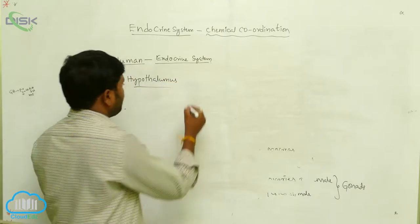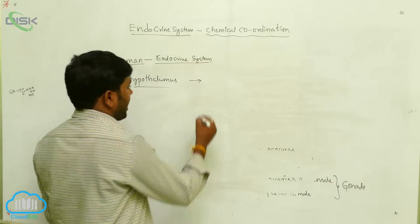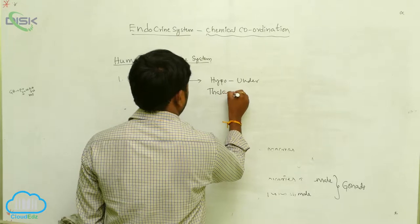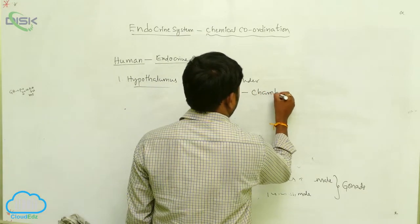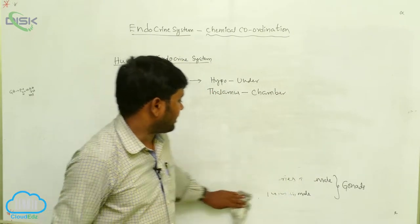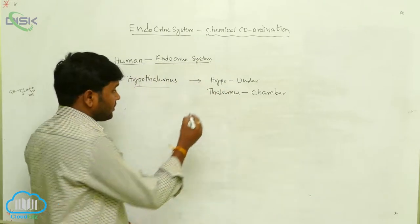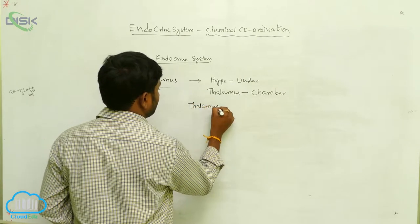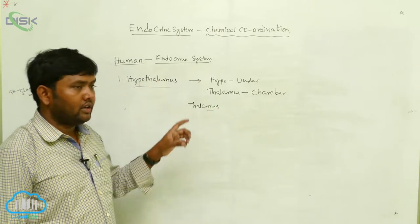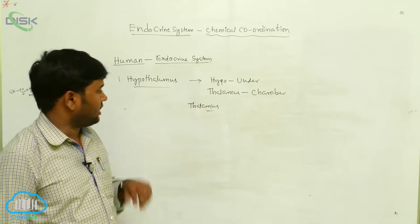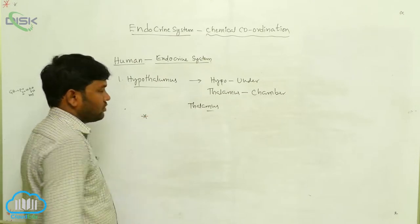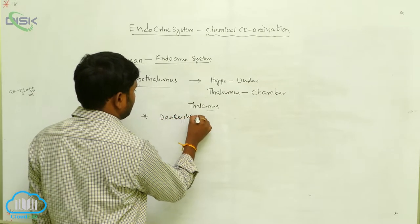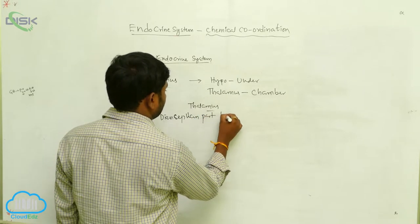The hypothalamus is a word derived from the Greek language. 'Hypo' means 'under.' So the hypothalamus is the endocrine gland located at the underside of the thalamus — below the thalamus. Generally, the hypothalamus is located in the diencephalon part of the brain.